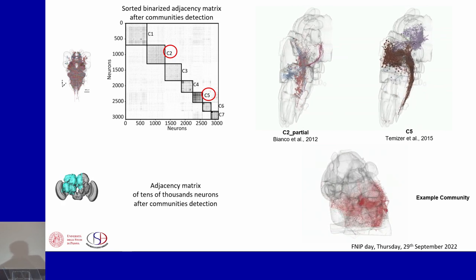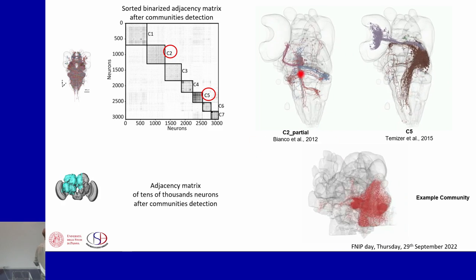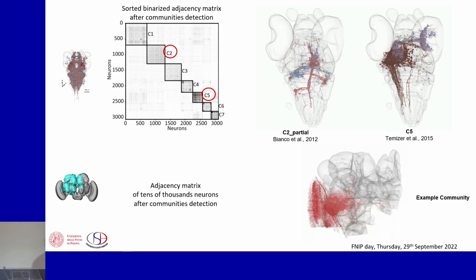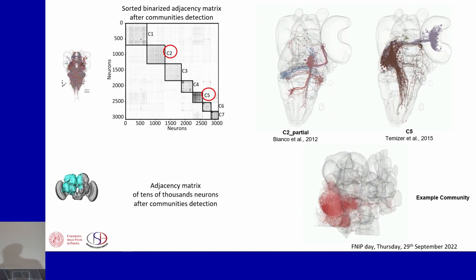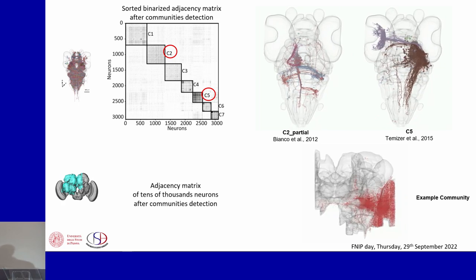As you see here, we have this one which is reported in literature for the vestibular ocular motor reflex, and this one for the zebrafish which is the main visual pathway.